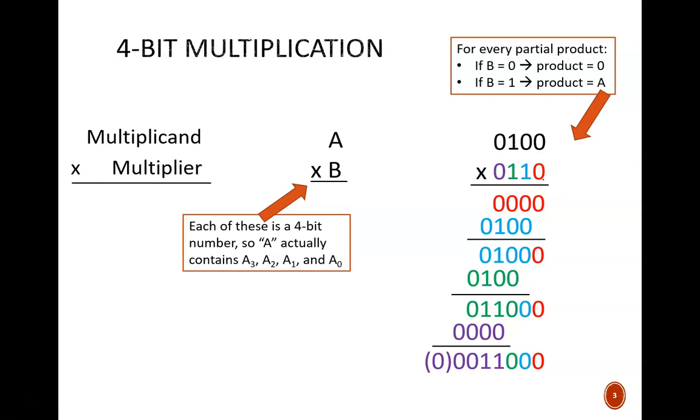Anything times 0 equals 0, so this partial product is simply four zeros. Next, we compute a partial product from the next bit in b, which is this blue 1. Anything times 1 equals itself, so the a value is replicated exactly on this line. Notice that this partial product is shifted to the left by one bit to align it with the corresponding bit in b.